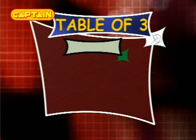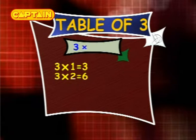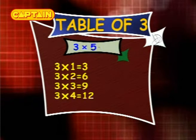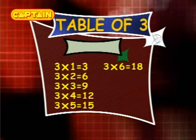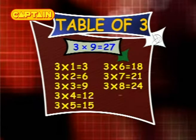Table of 3. 3×1 is 3. 3×2 is 6. 3×3 is 9. 3×4 is 12. 3×5 is 15. 3×6 is 18. 3×7 is 21. 3×8 is 24. 3×9 is 27. 3×10 is 30.